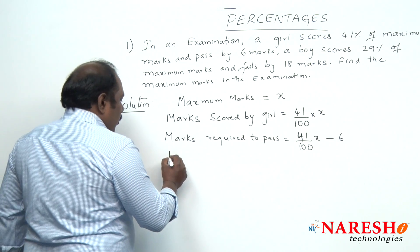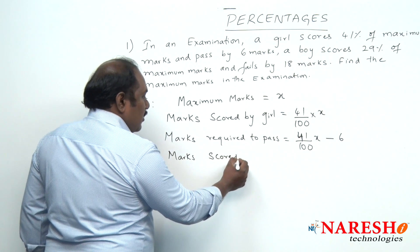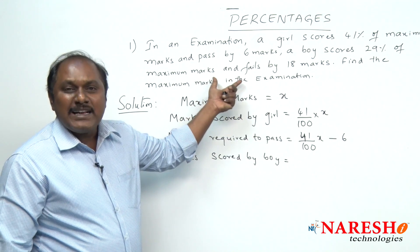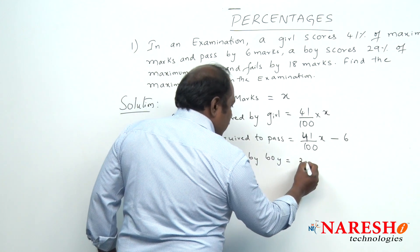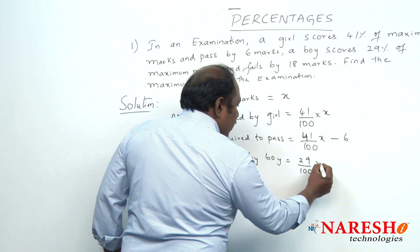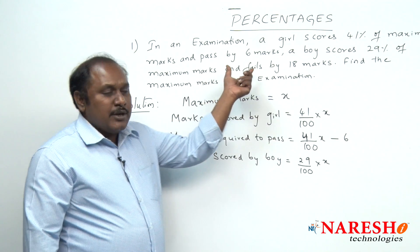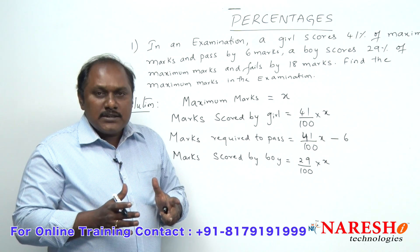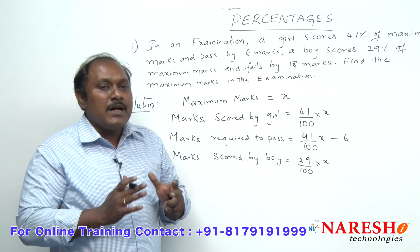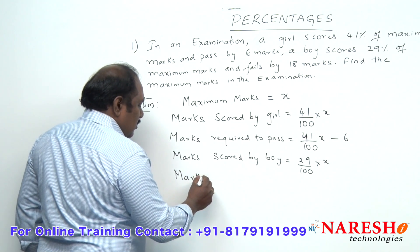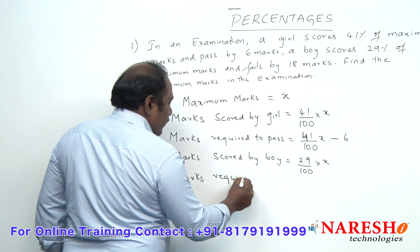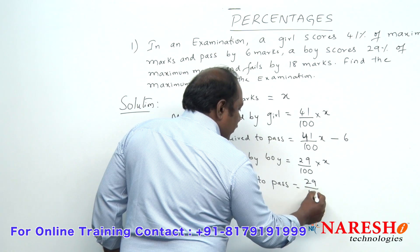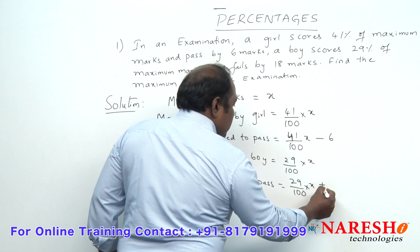Next, what are the marks scored by boy? In the question it is given a boy scores 29% of maximum marks, so the marks scored by boy should be 29/100 × x, and it is given that he fails by 18 marks. That is, he scored 18 marks less than the marks required to pass. So, marks required to pass will be 29x/100 + 18.